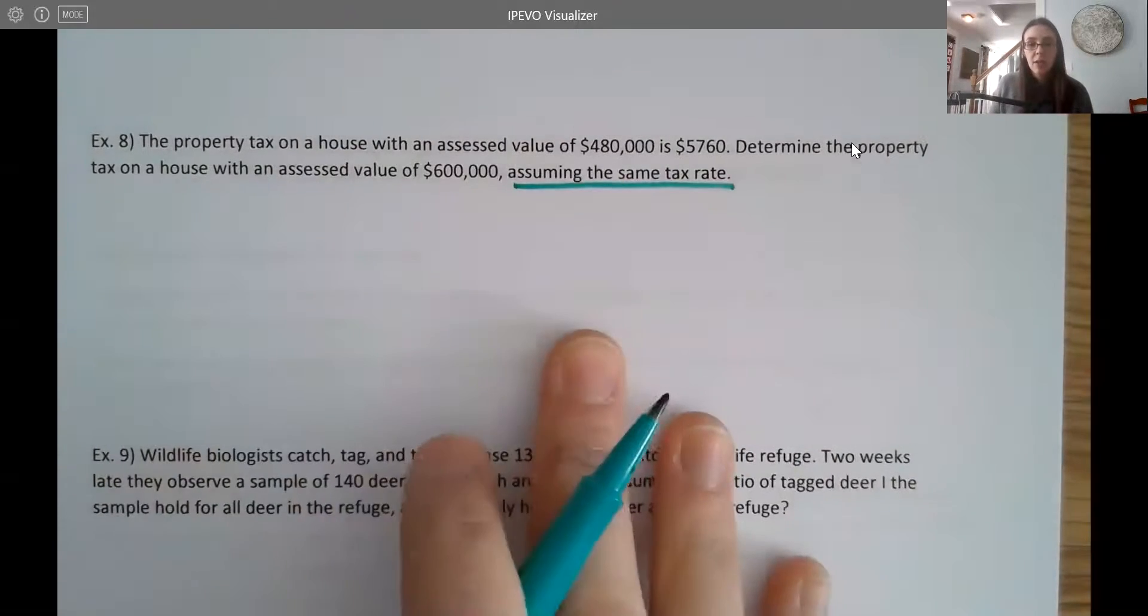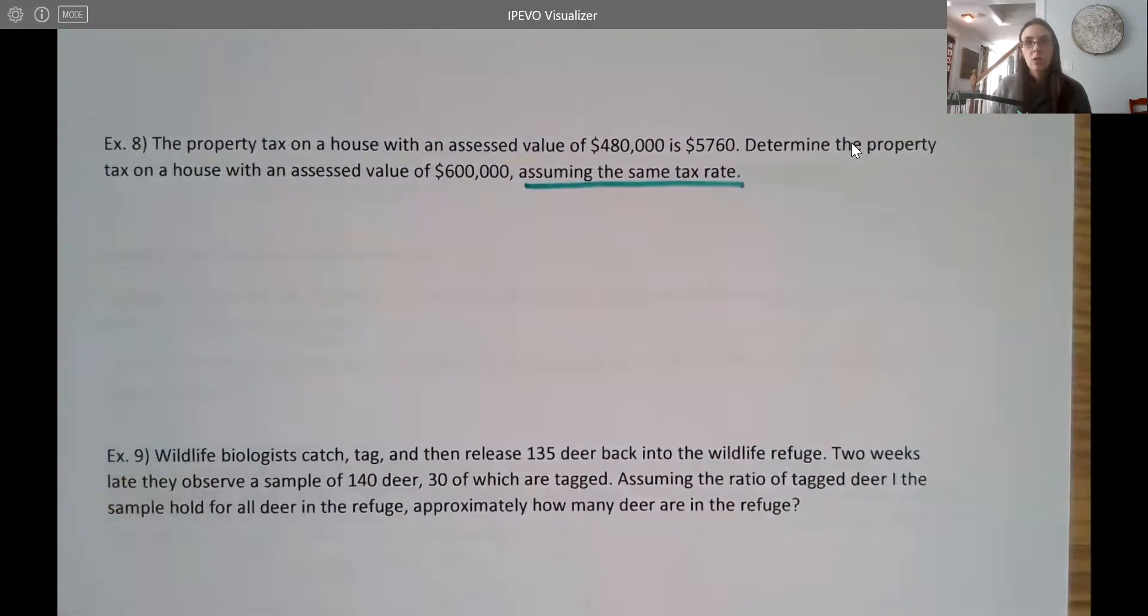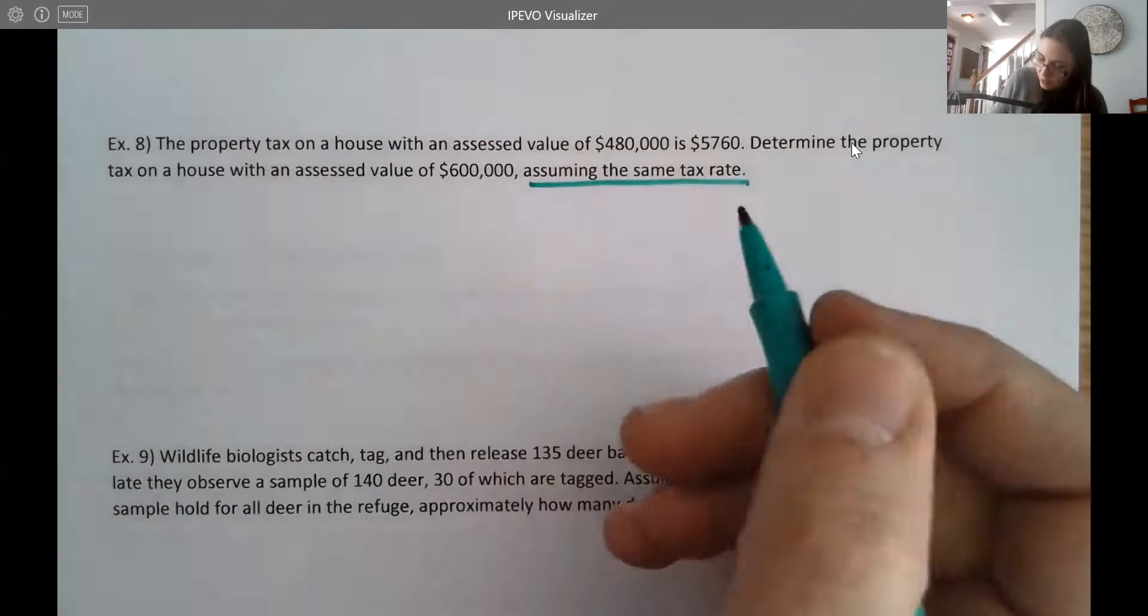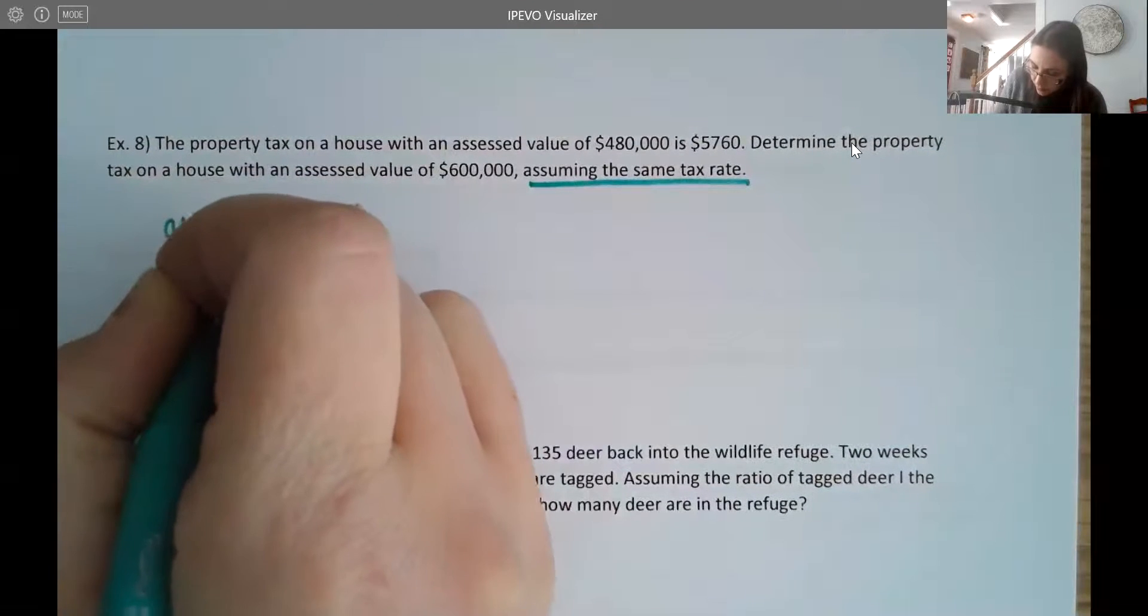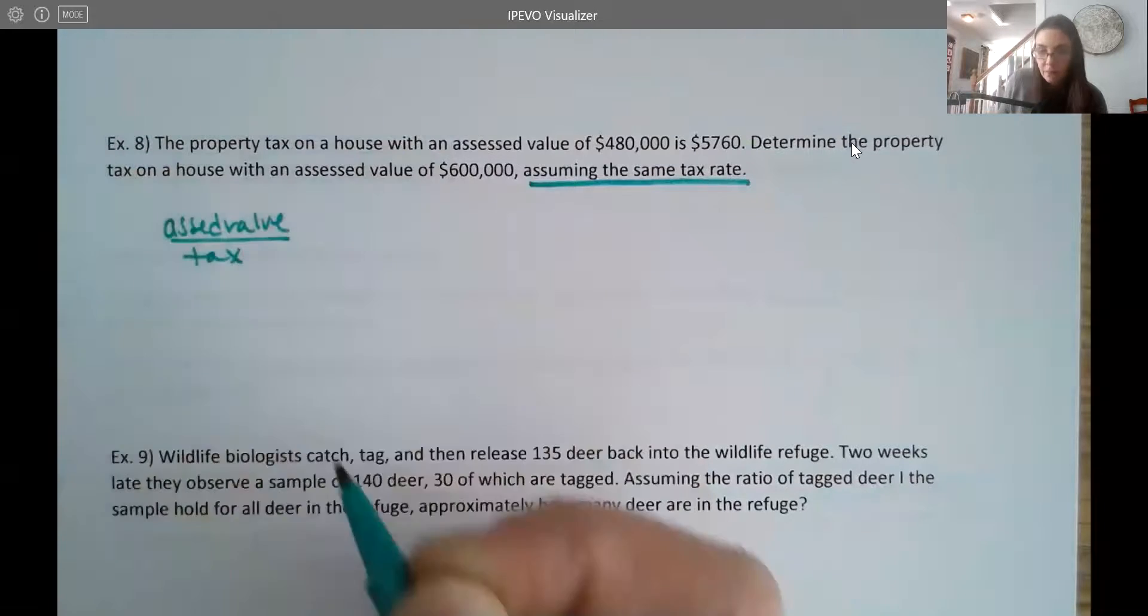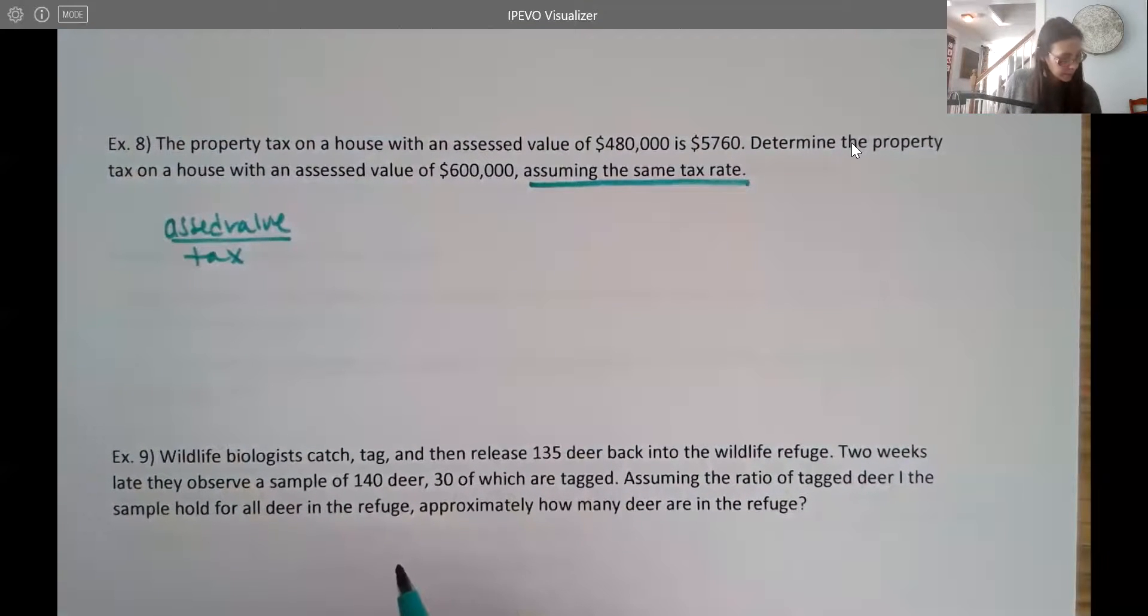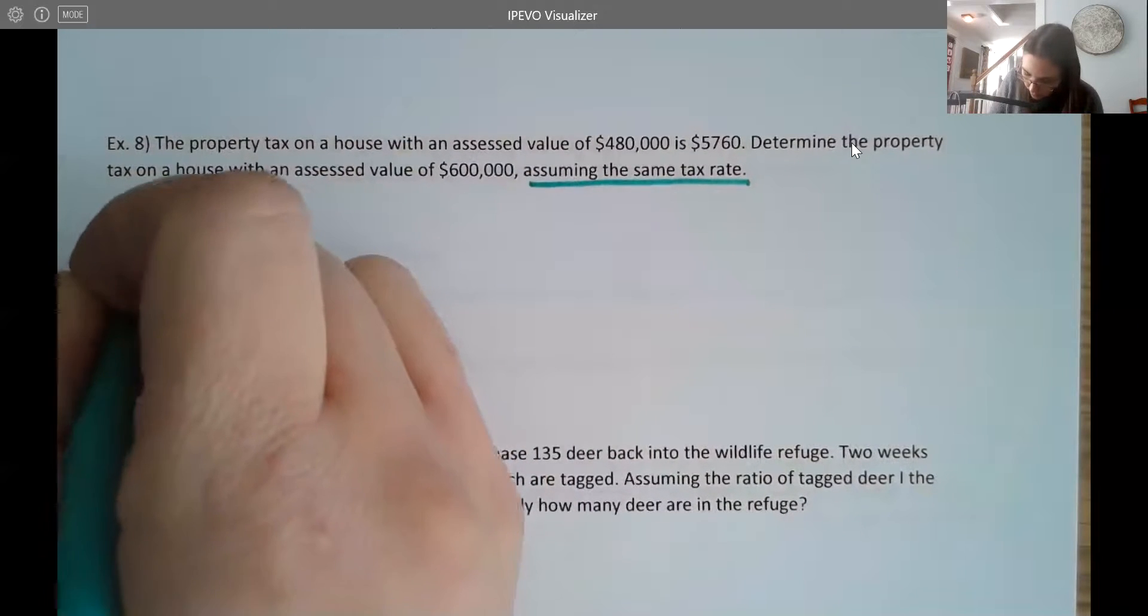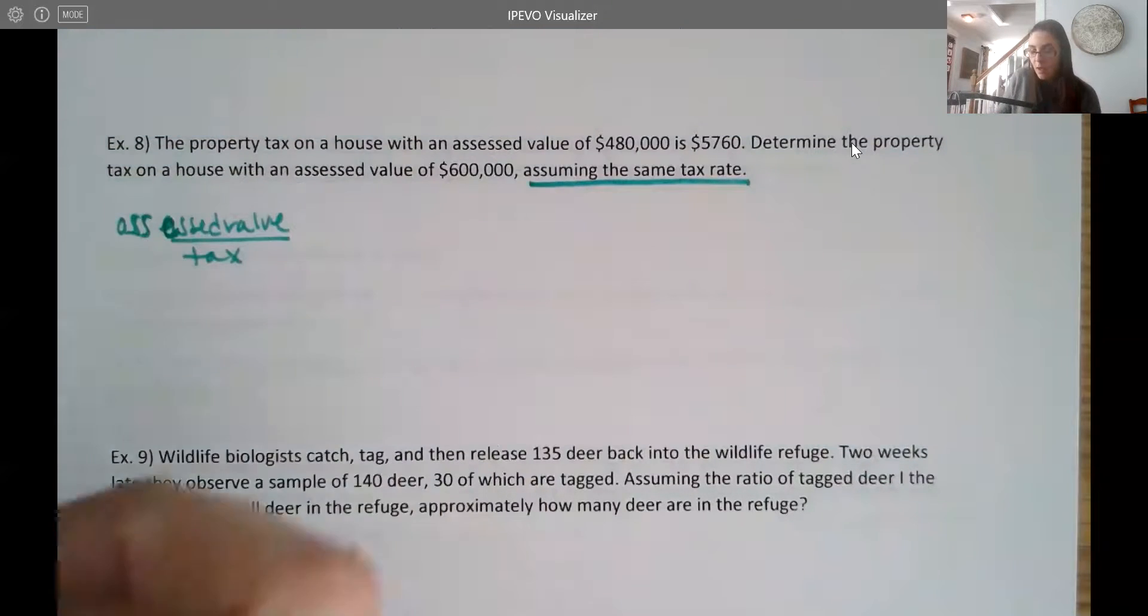Now, we're going to use a proportion here to set this up. And the thing with proportions is you can almost do whatever you want as long as you keep your ratios consistent. So you're thinking about units here. So for instance, one way to set it up is to compare the assessed value with the tax.